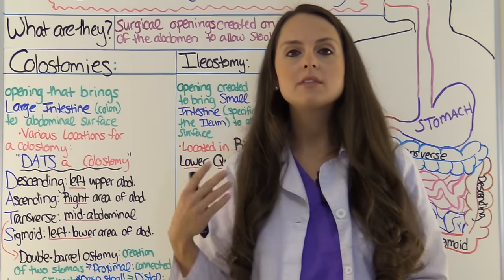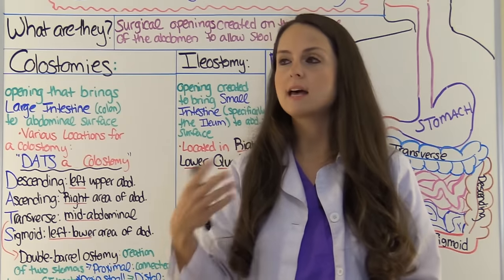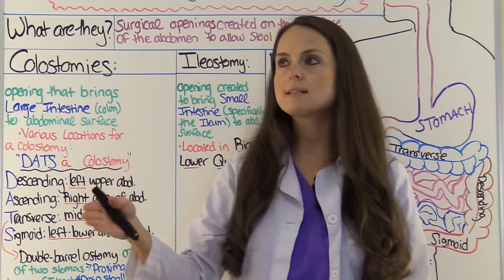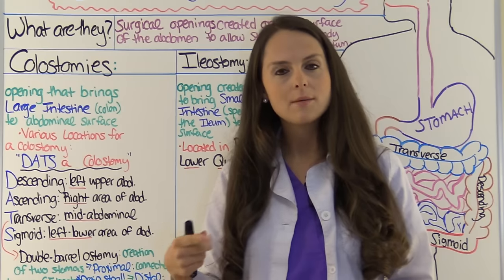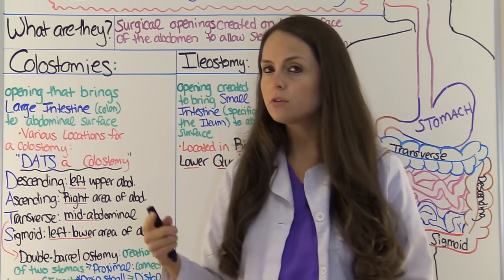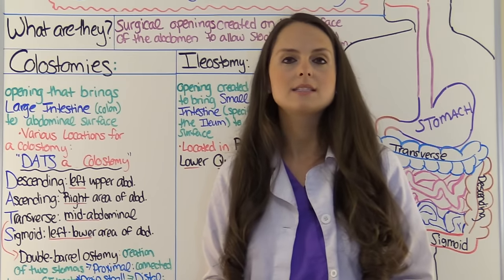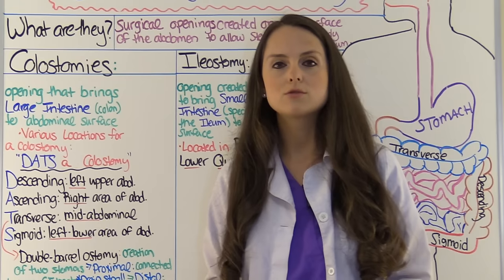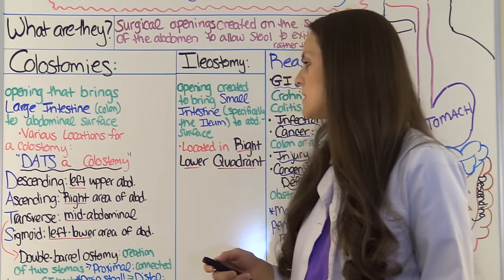You need to know these types because when assessing a patient with a colostomy, if you see it on the right side, the left side, or mid-abdominal, you need to know what type of colostomy it is and what type of stool you would be expecting. Depending on its location, there are going to be different varieties of stool.